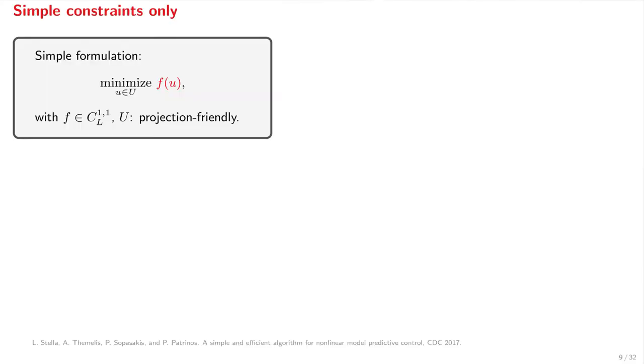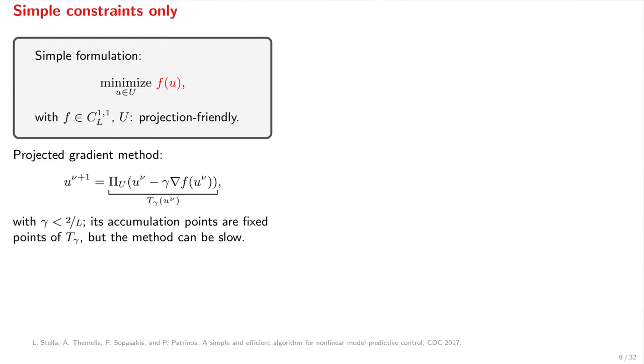I will present the numerical optimization algorithm that we use to solve such problems. Consider again the case where we have no constraints of the F1 and F2 type. One possible way to solve such problems is to use the projected gradient method, which consists in iteratively applying operator T gamma. Here, the gradient of f can be computed using automatic differentiation. For this method,